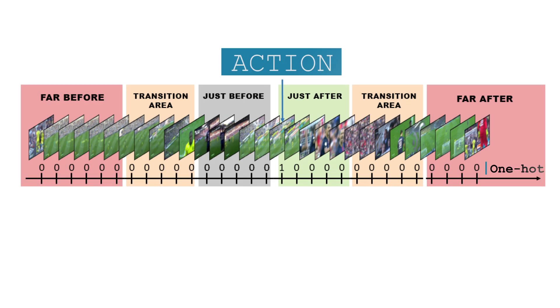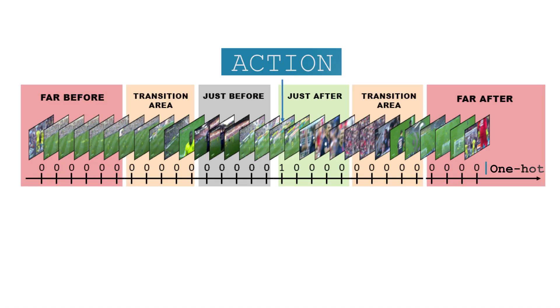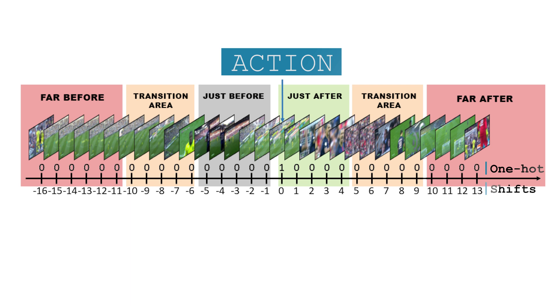Nevertheless, all the frames contained in these temporal segments have the same default label — 0 — because they do not correspond to an annotated action frame. This is problematic. The frames located just after the action and those located far after clearly carry different information about that action, despite having the same label. We transform the frame labels into the time shifts between the frames and the action. Now the annotation is much richer, and our action context slicing is delimited by context slicing parameters.